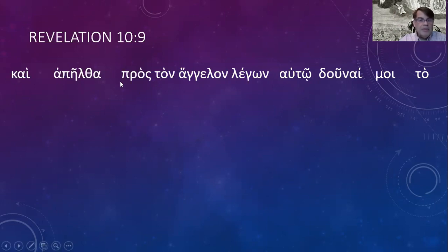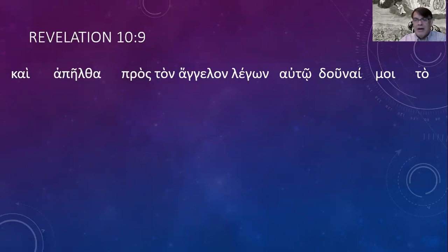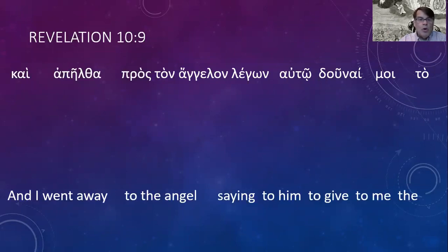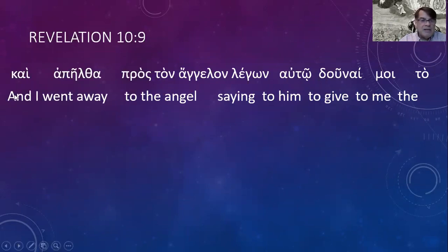Kai apeltha, proston angalon, legon auto, dunai moi to bibliridion. So: kai is 'and,' and I went away to the angel saying to him, 'give to me the little book.'